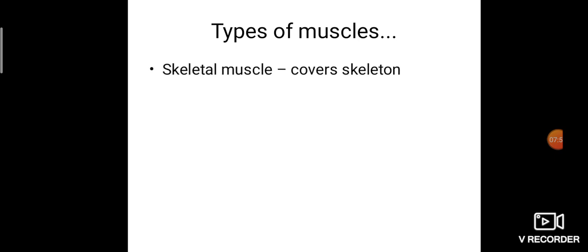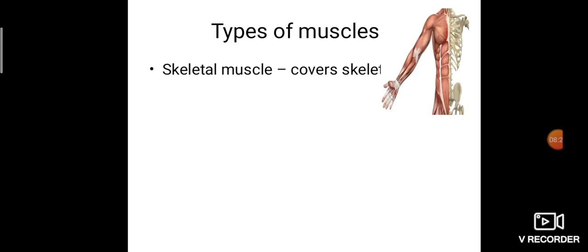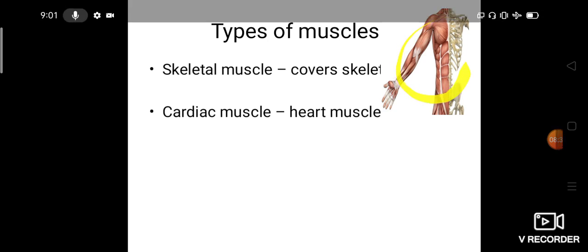There are mainly three types of muscles. The first is skeletal muscle — the muscle that covers our bones. If you have ever seen a chicken leg piece, the meat surrounding the bone is an example of skeletal muscle. The bones are covered by muscles, and those muscles are called skeletal muscles.